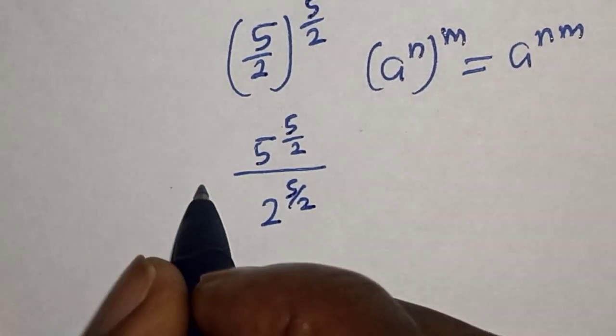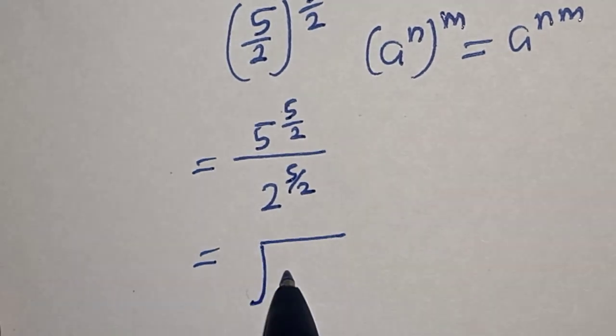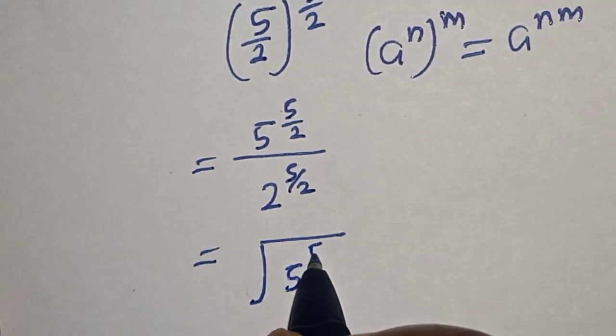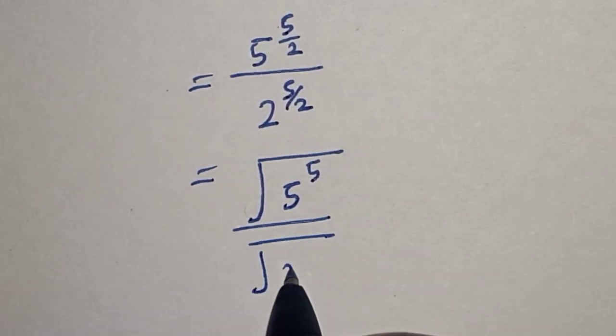And this equals the square root of 5^5 over the square root of 2^5.